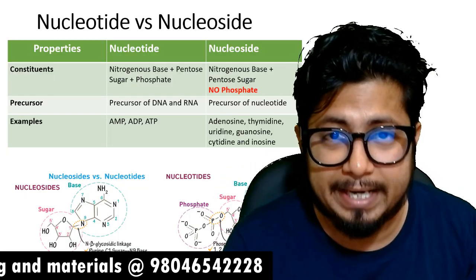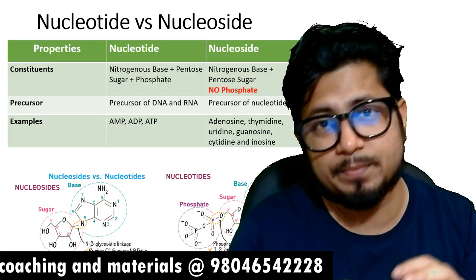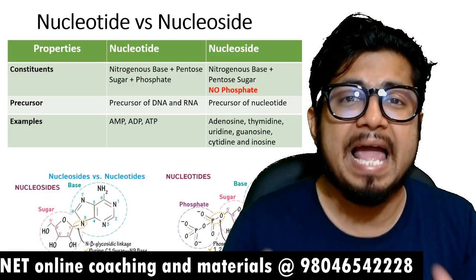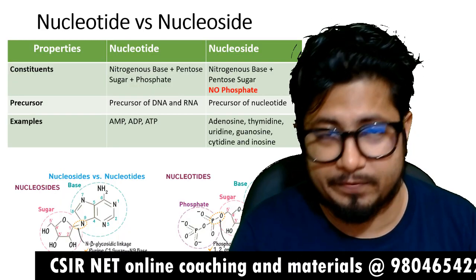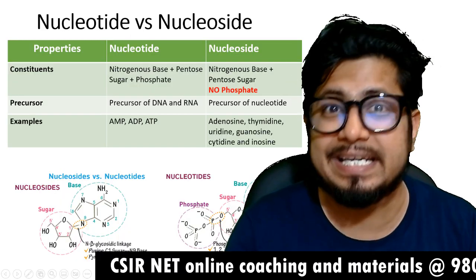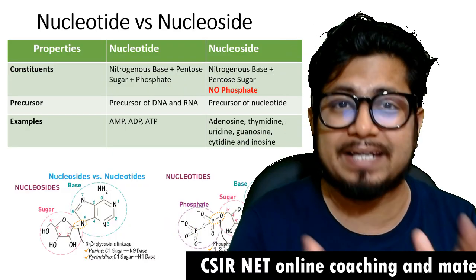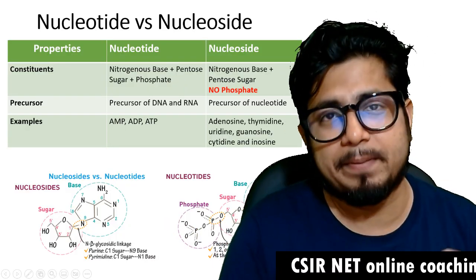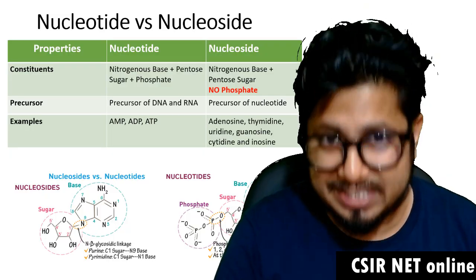These are examples of nucleosides, and once they attach with phosphate, for example adenosine attached with one phosphate becomes adenosine monophosphate (AMP), with two phosphates becomes adenosine diphosphate (ADP), and with three phosphates becomes adenosine triphosphate (ATP). So AMP, ADP, and ATP are examples of nucleotides.